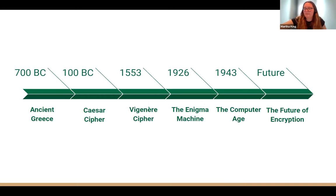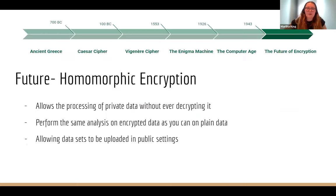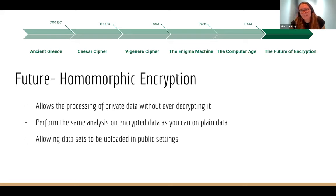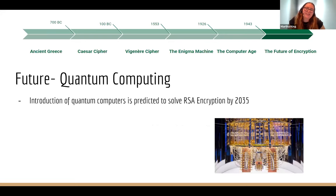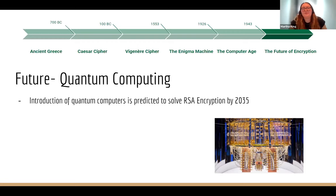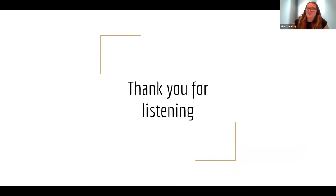What about the future of encryption? Homomorphic encryption is in its early days and allows analysis of data that has been encrypted without decrypting it. As long as you have the key you can access that analysis. This will allow large confidential datasets to be stored in public spaces like the cloud, which will massively help healthcare and banking businesses. Additionally, quantum computers are predicted to be able to solve RSA encryption by 2035, so industry leaders are looking into quantum-safe methods.